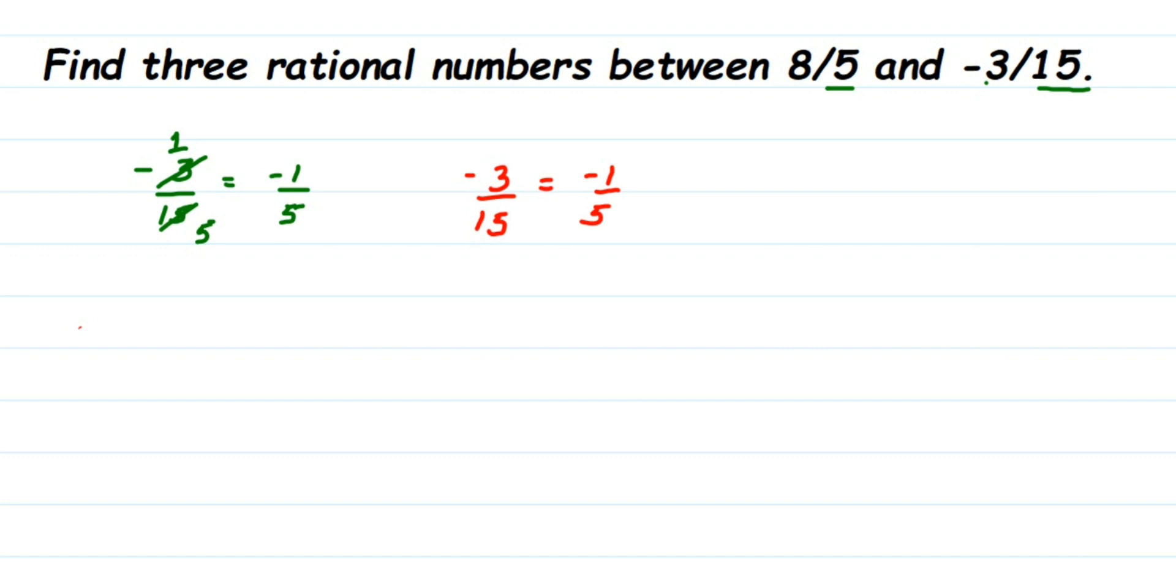Now let's look at these two numbers: we have -1/5 and 8/5. The denominators are the same, so we just have to look at the numerators. You can see that in the gap between -1 and 8, we have a lot of numbers in between.